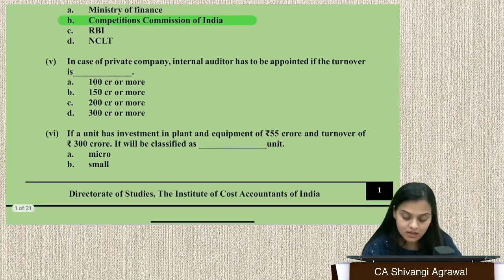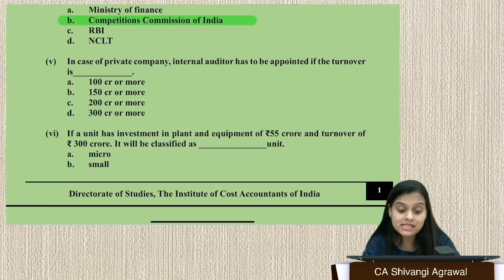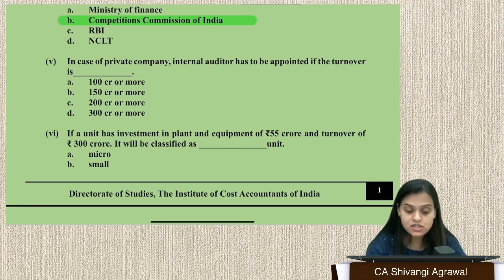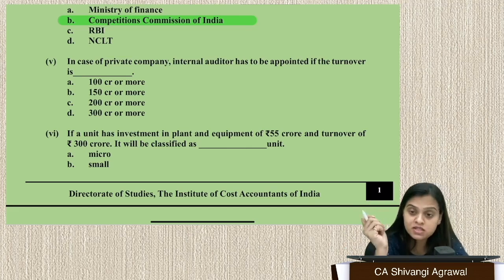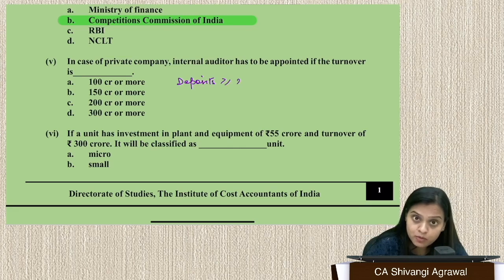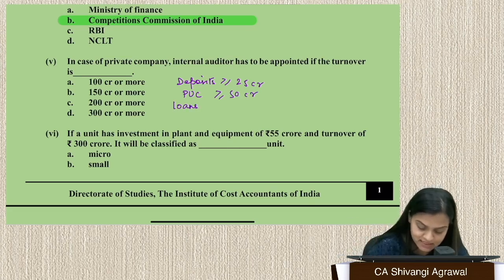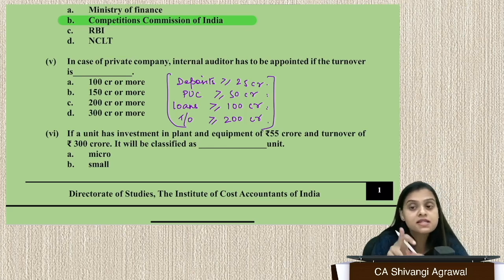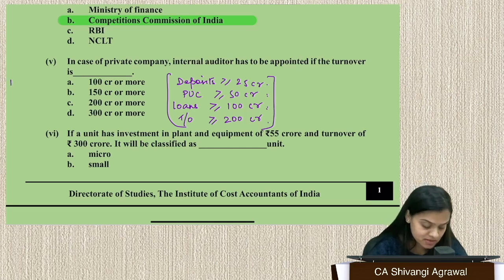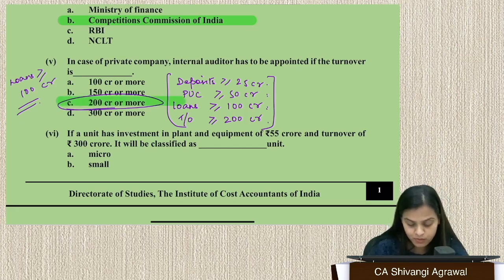Question 5: In case of a private company, an internal auditor has to be appointed if the turnover is how much? For a listed company, internal auditor is mandatory. For an unlisted public company: deposits ≥25 crore, paid-up capital ≥50 crore, loans ≥100 crore, or turnover ≥200 crore — it just keeps doubling. But for a private company specifically: loans more than or equal to 100 crore at any point, or turnover of 200 crore or more.